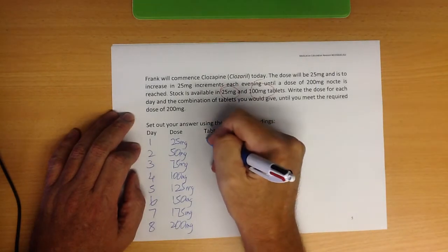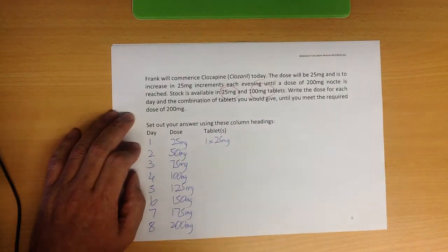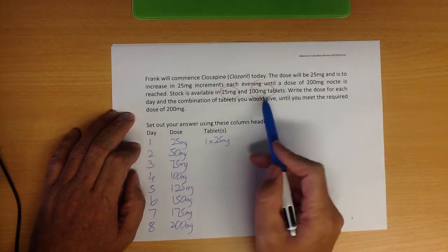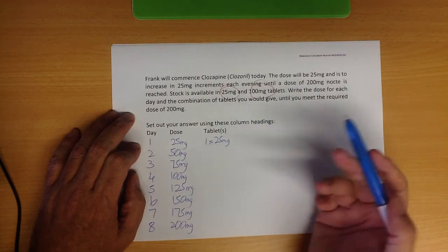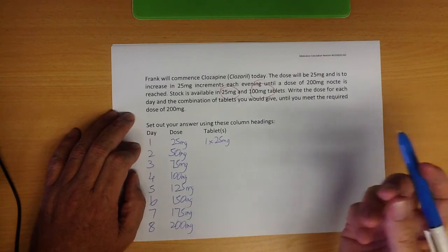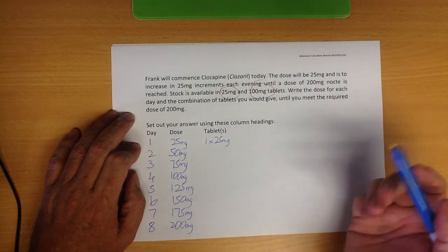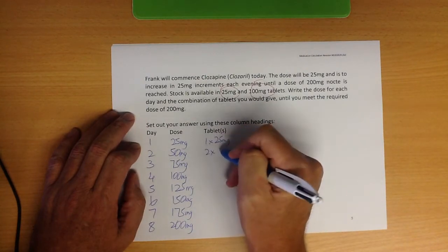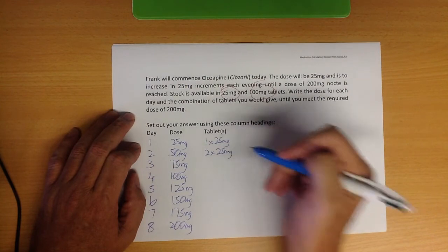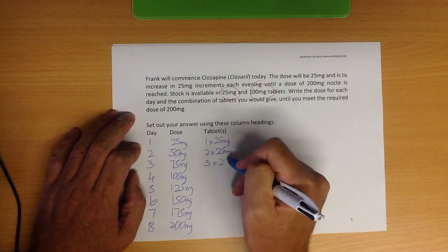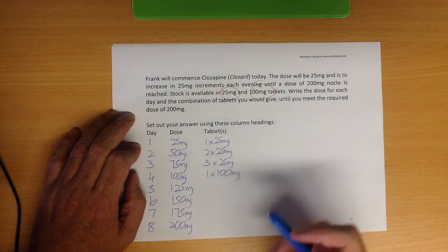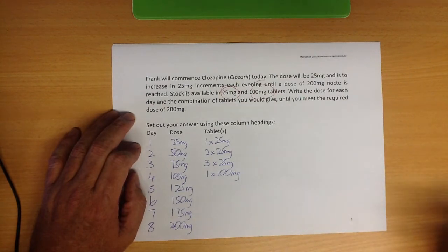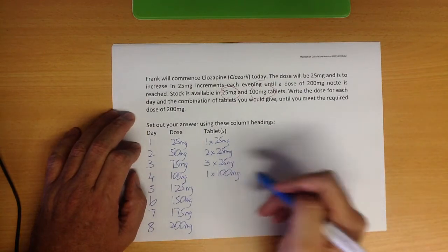So we've got 25 and 100 milligram tablets. There's that principle that was in the lecture about giving the least amount of whole tablets possible when you can. Easy for day one, we just give one by 25 milligram tablets. But for day two, we'd be silly to be breaking a 100 milligram tablet in half, assuming that it's scored, for two reasons. One, what do you do with the other half? And two, the half a scored tablet isn't going to be as precise a dose as two whole tablets. So let's do the sensible thing as you do in clinical practice. You'd give two 25 milligram tablets, then three 25 milligram tablets to make 75.